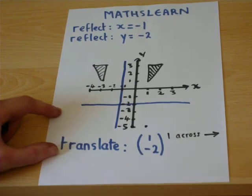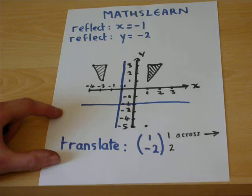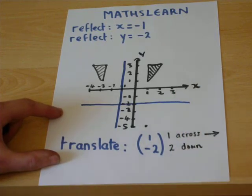The lower number is vertical motion, so 2, and if it's a minus, it's 2 down.